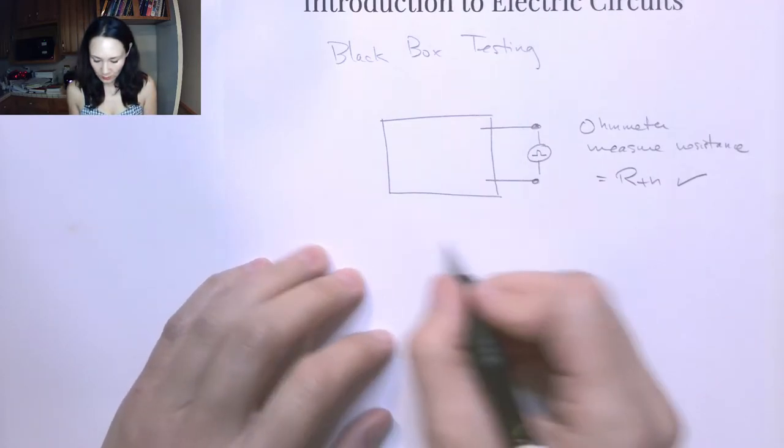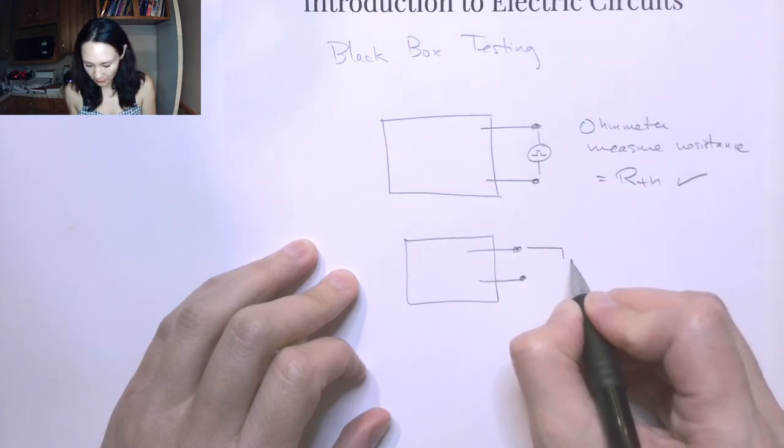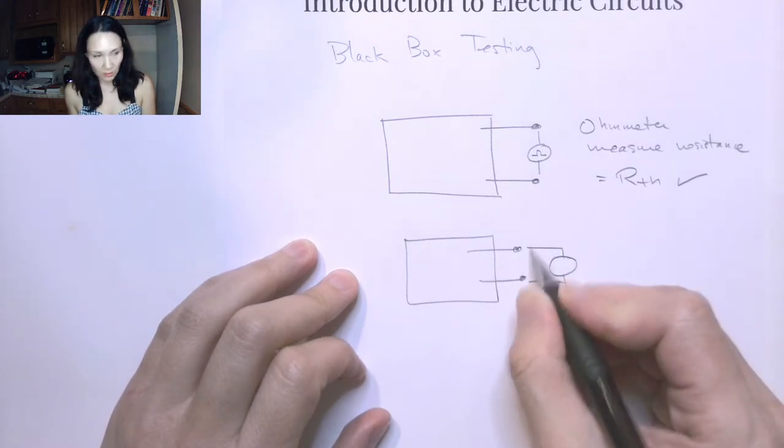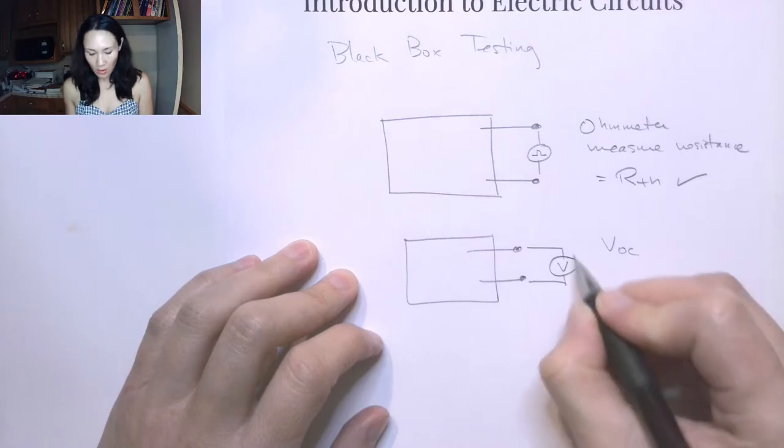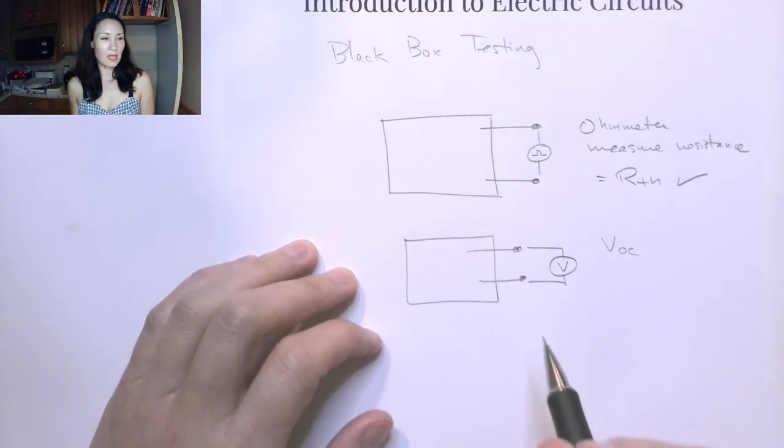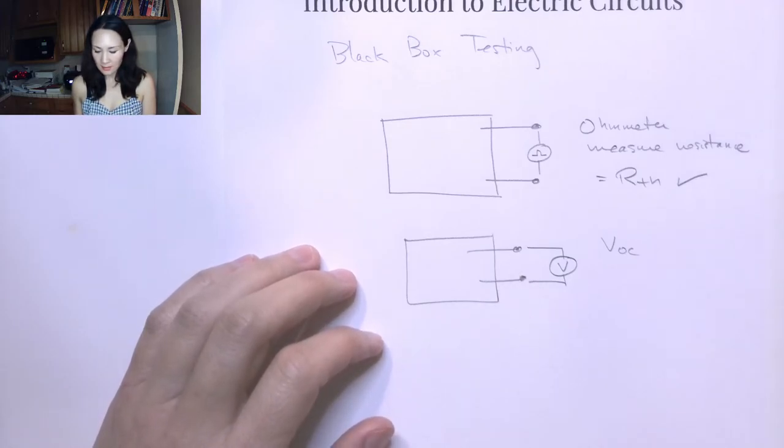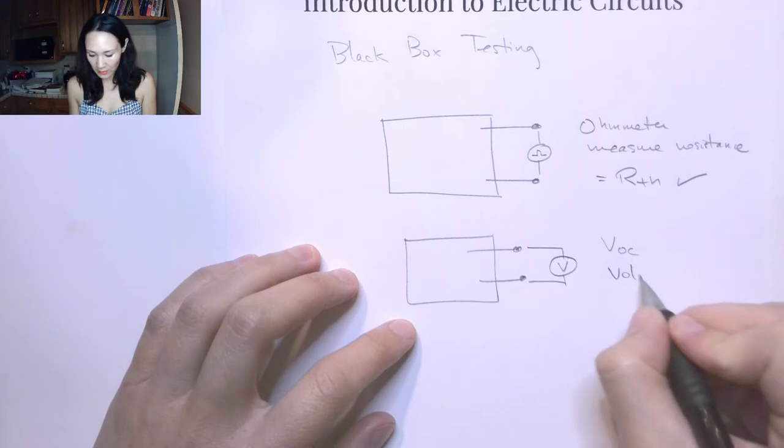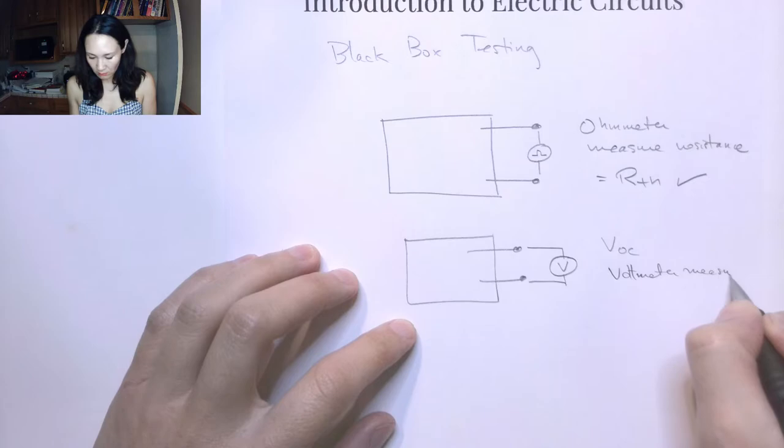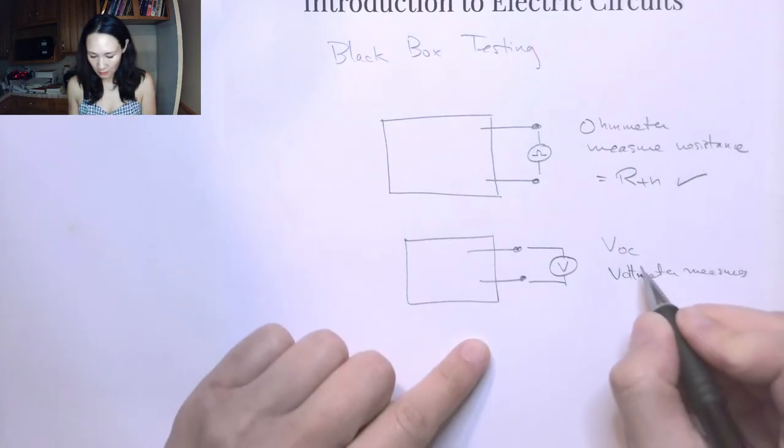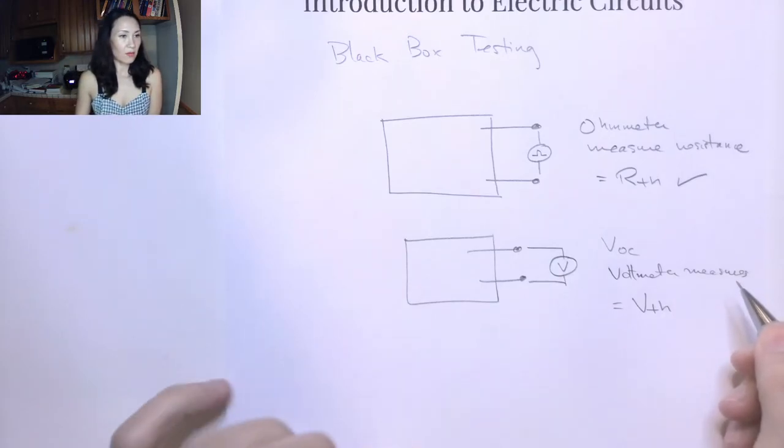Now the next thing we can do is hook up a voltmeter. If we hook up a voltmeter to these leads and measure the voltage of our open circuit here, we don't connect any kind of resistor or anything like that. We just put the voltmeter directly across the leads. The V_open_circuit that we measure from the voltmeter is actually going to be our V_Thevenin.